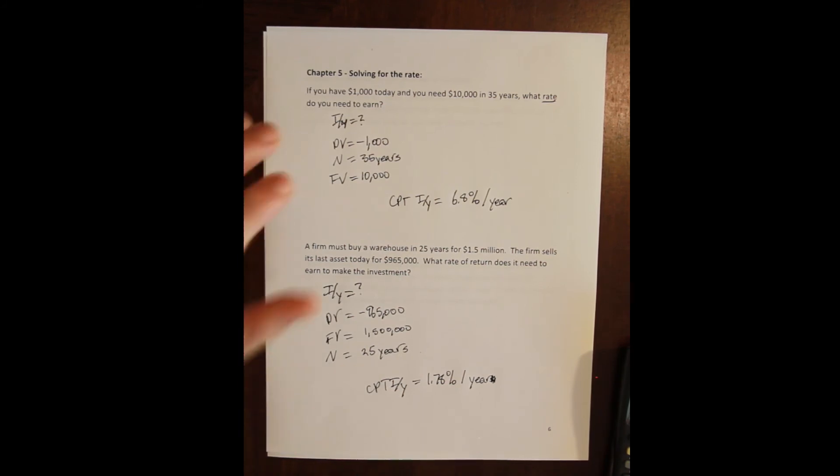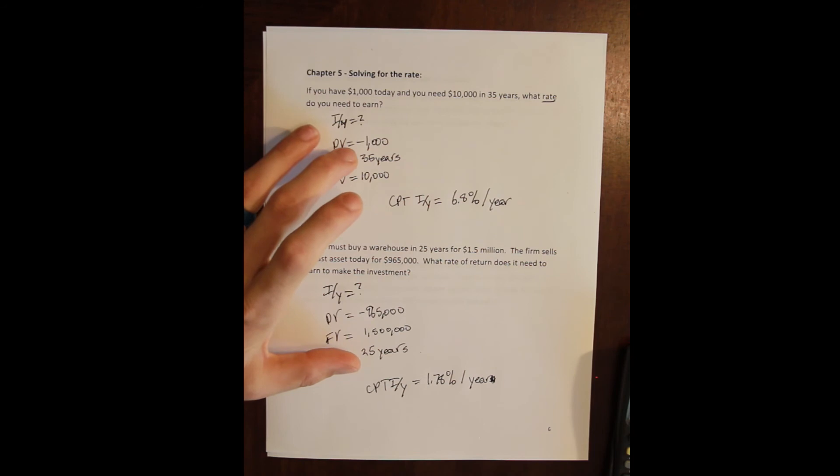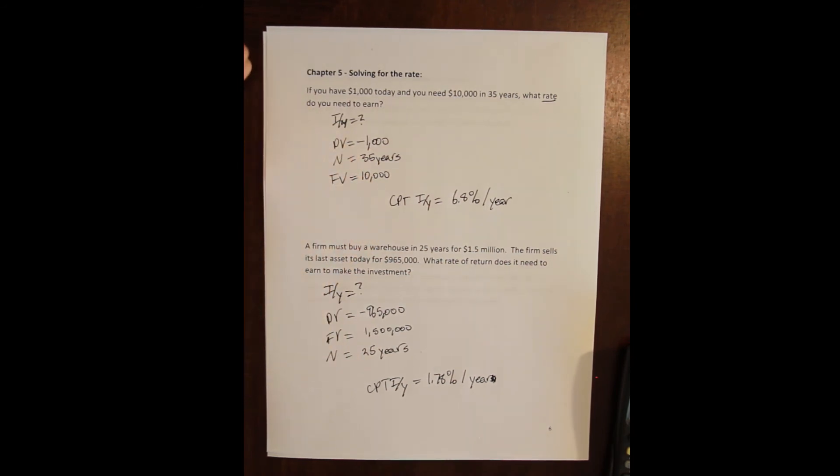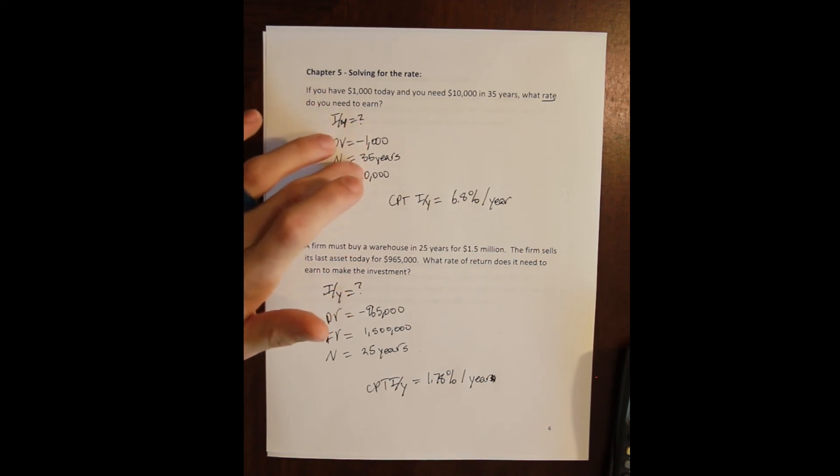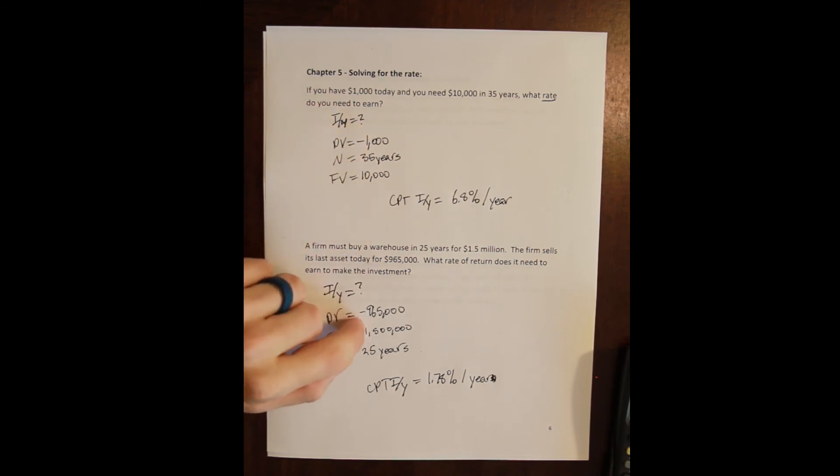Now notice a couple of things. Notice that between these two problems, something is illustrated about the financial world and the way finance works in general. And it's part of something that you've probably heard of before, which is that it takes money to make money. So both of these investment accounts are for about the same amount of time. Pretty similar. 35 years, 25 years. There's a 10 year difference, but they're both a long investment horizon. But the amount of money that we start with is significantly different. Here we start with a thousand dollars and here I start with almost a million. The amount of money I want to make is also significantly different. Here I am only trying to make $9,000. Here I'm trying to make $500,000.